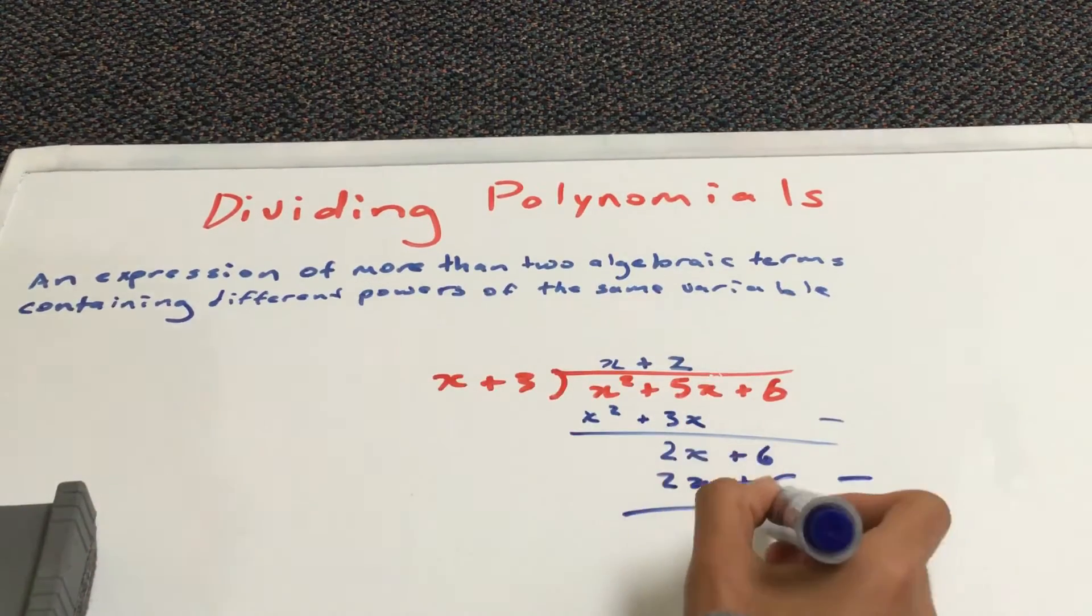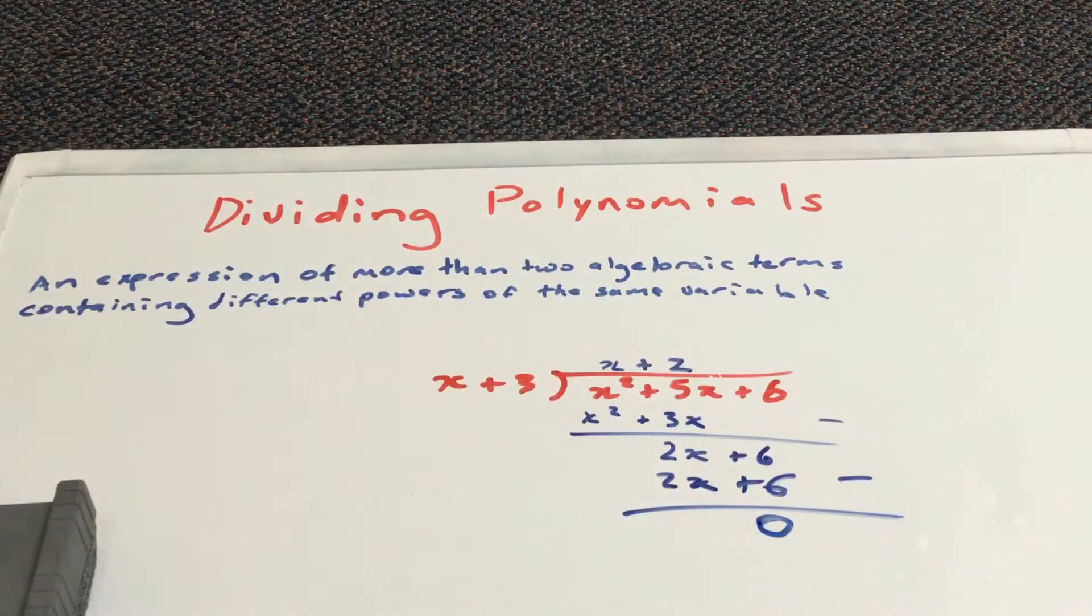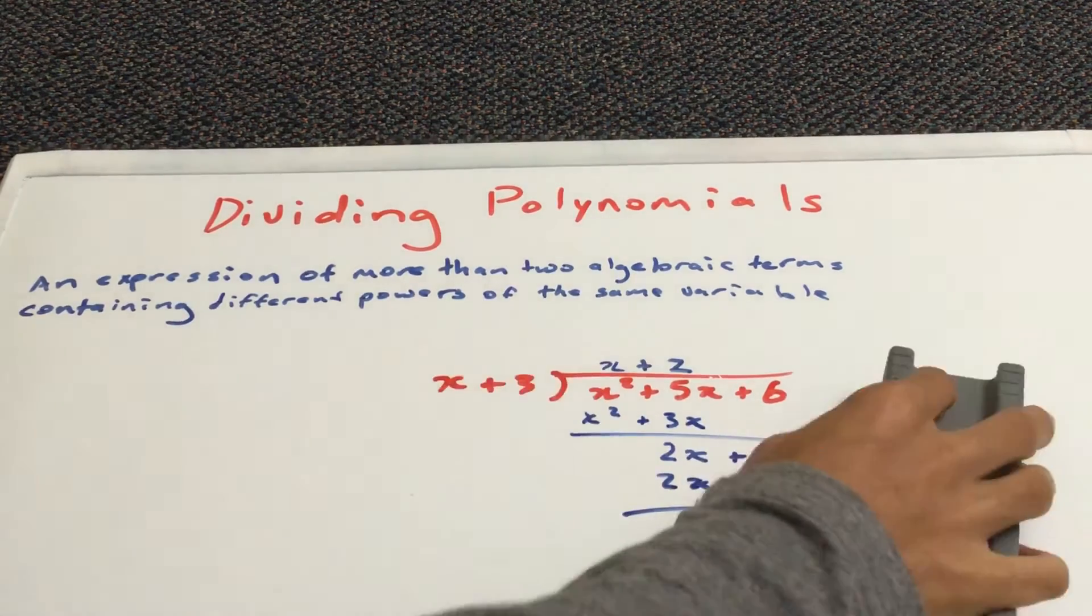And now, you should get 0. So, you have a remainder of 0 and an answer of x plus 2. So, that's your answer.